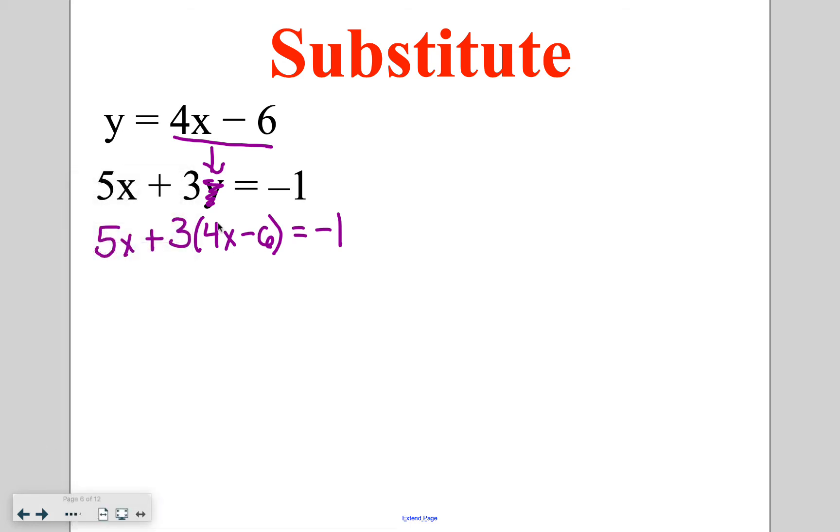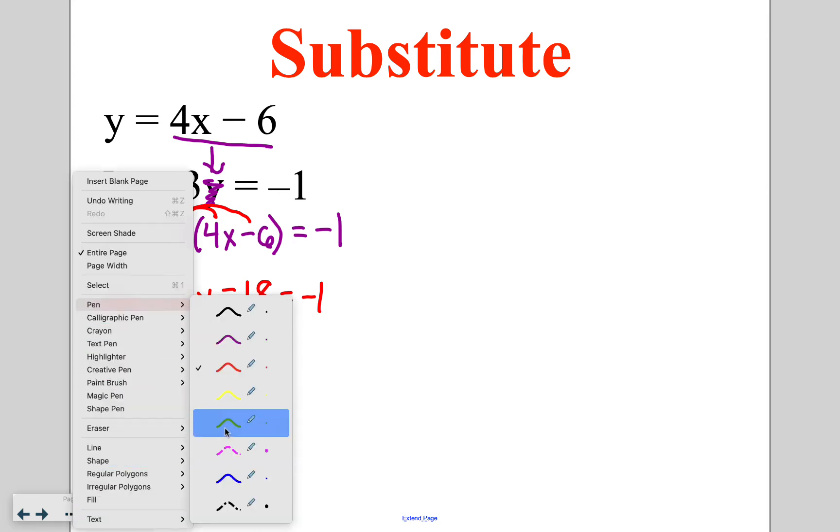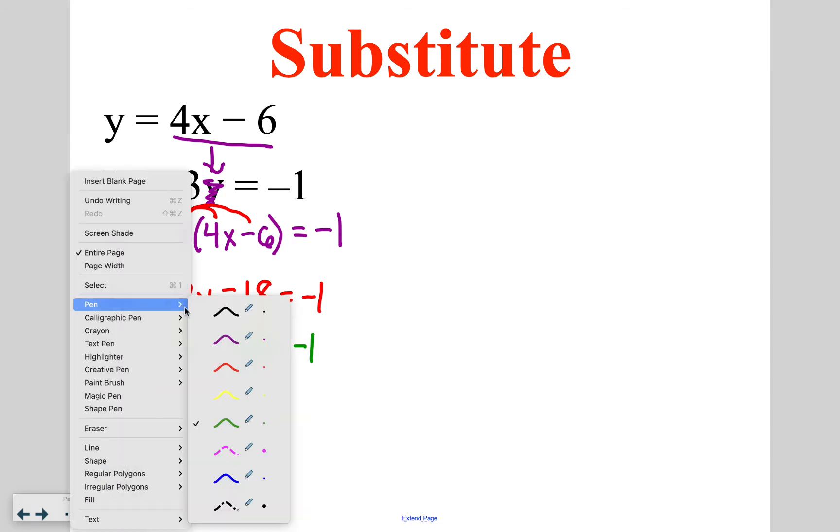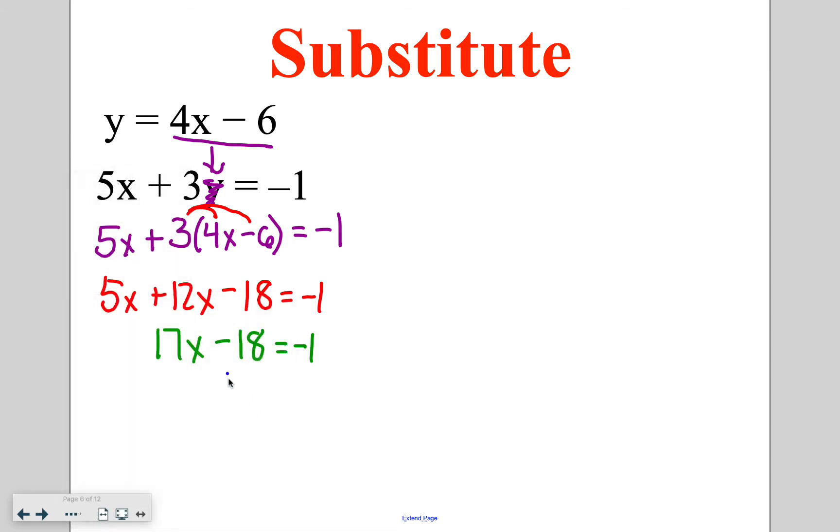In order to do that, I'm going to have to get rid of my parentheses first using the distributive property. So I have 5x plus 12x minus 18 is equal to negative 1. Then I'm going to combine my like terms. 5x plus 12x is going to give you 17x minus 18 is equal to negative 1. Then I need to get rid of subtracting 18. So I'm going to add 18 to both sides of my equation, and that gives me 17x is equal to 17.